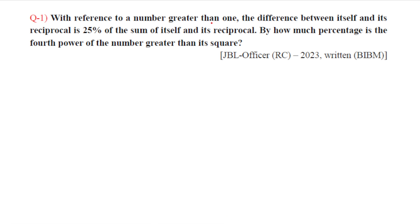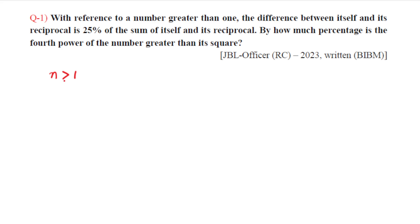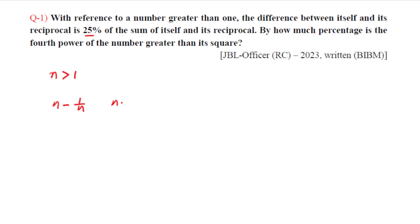Let the number be n, where n is greater than one. The difference between itself and its reciprocal means n minus one by n. Since n is greater than one, n minus one by n is positive. The condition states this difference equals 25 percent of the sum of itself and its reciprocal, so: n minus 1/n = 25% of (n + 1/n), which means n minus 1/n equals one-fourth of (n + 1/n).